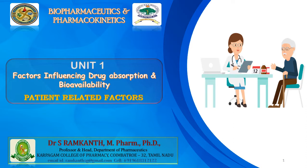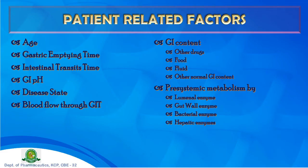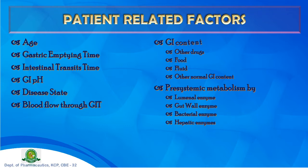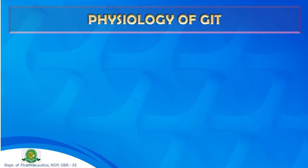Under patient-related factors, we cover: age, gastric emptying time, intestinal transit time, gastrointestinal pH, disease state, blood flow through the GIT, gastrointestinal contents including food-drug interaction, gastrointestinal fluid, and pre-systemic metabolism by luminal enzymes, gut wall enzymes, bacterial enzymes, and hepatic enzymes.